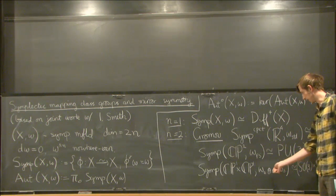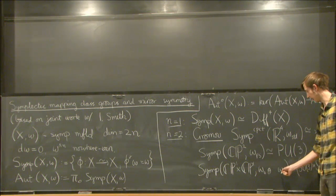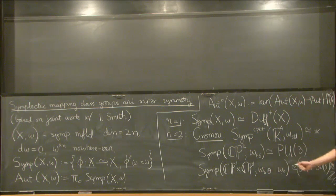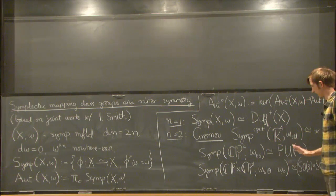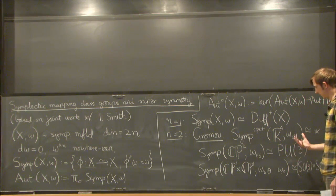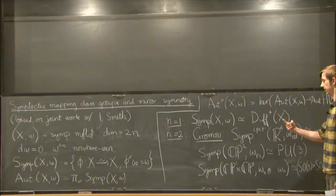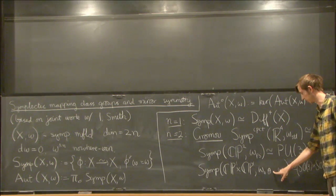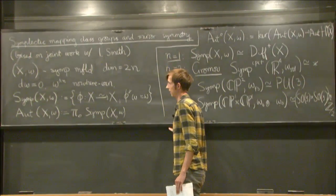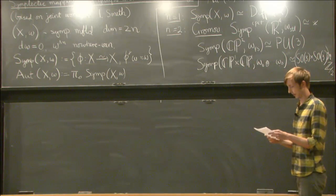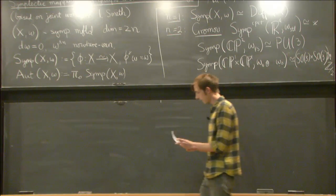On the other hand, if you make this symplectic form a multiple of this one that's not equal to one, you get a much more complicated topology. The rational cohomology has been computed by Abreu and Macduff, and it turns out it's a polynomial ring in four generators, and one of them kind of jumps degree up by four every time the multiple you put here crosses an integer. So, these can do strange things.